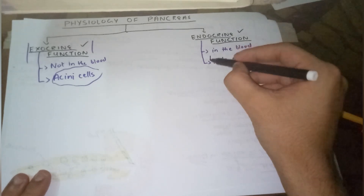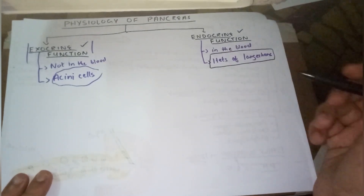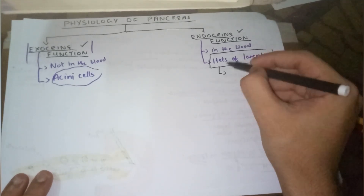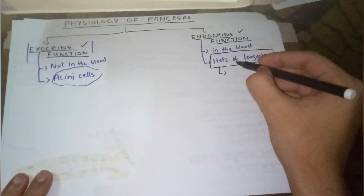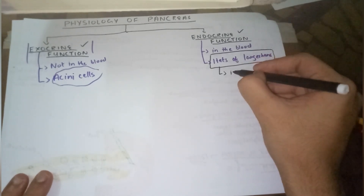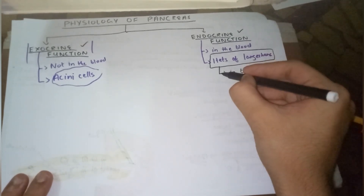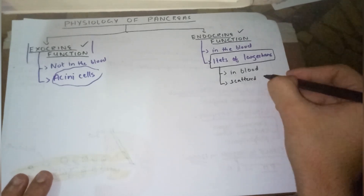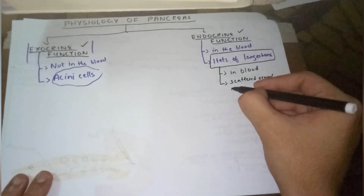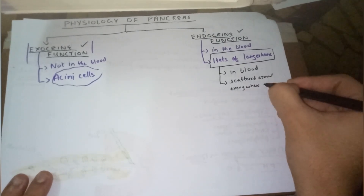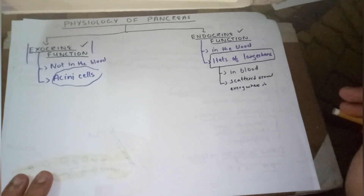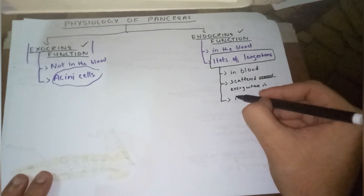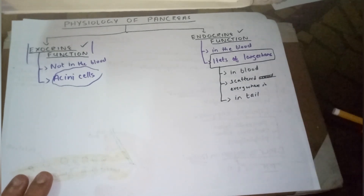In the endocrine function we are going to discuss about the islets of Langerhans cells. These are the ones which perform the endocrine function — they secrete their hormones into the blood. They are scattered everywhere in the pancreas, and they are more abundant in the tail.